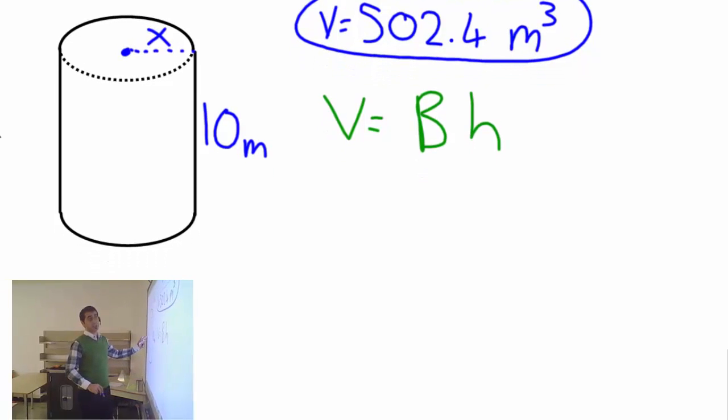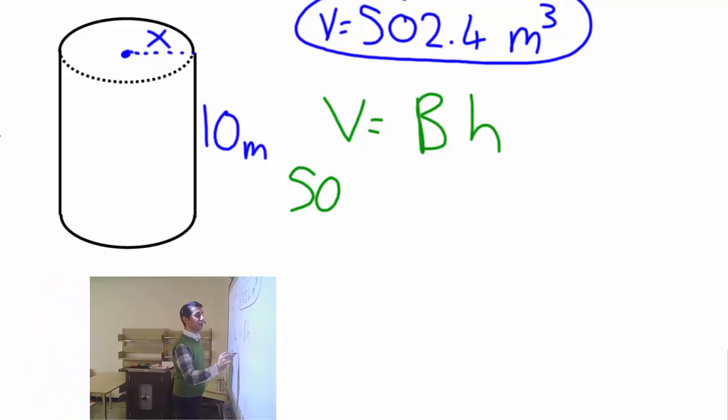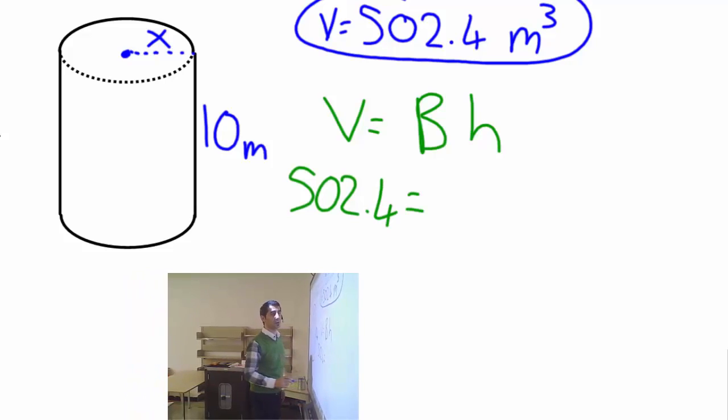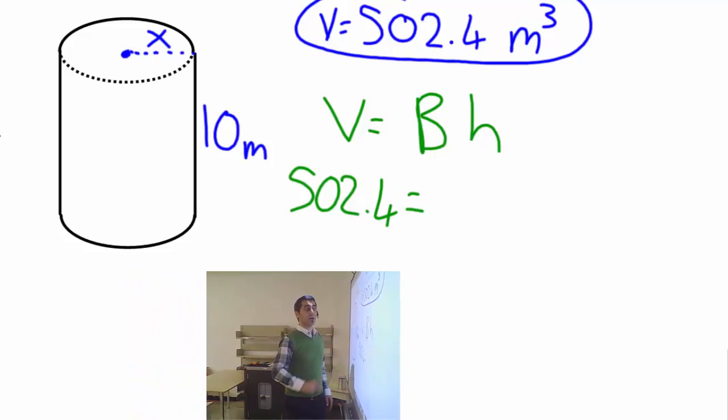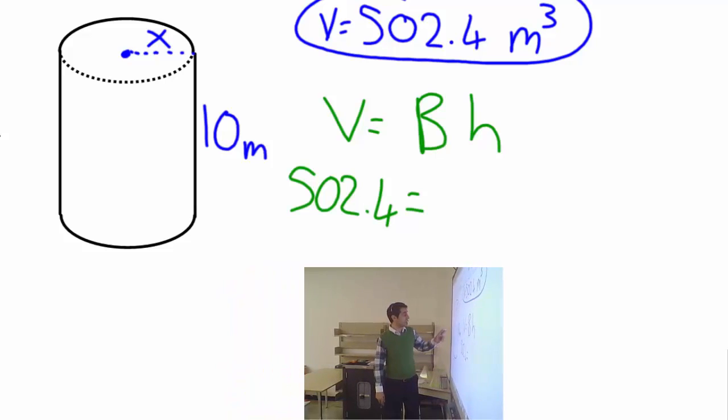Let's write down what we know. Volume is 502.4 equals B. I don't know the B, so let's calculate the B on the side.